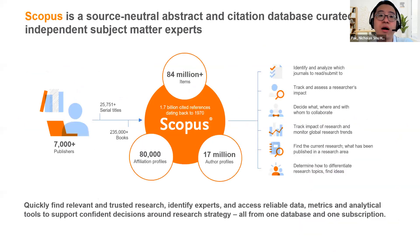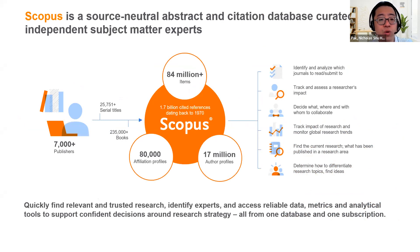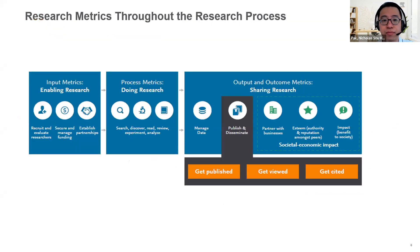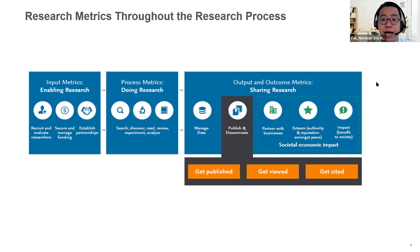I want to showcase how most of you will be able to leverage Scopus. Scopus is the world's largest abstract indexing database. We work together with over 7,000 publishers to index from over 25,000 serial titles. We have access to up to 84 million items. You can discover over 17 million author profiles as well as 80,000 affiliations. A very key component on Scopus would be what we call research metrics — we have input metrics, process metrics, and output and outcome metrics.